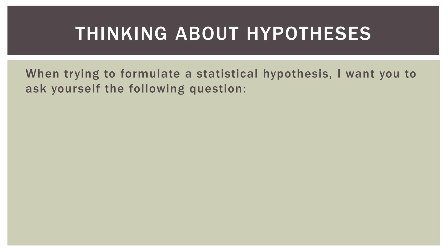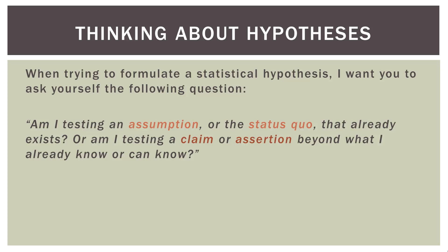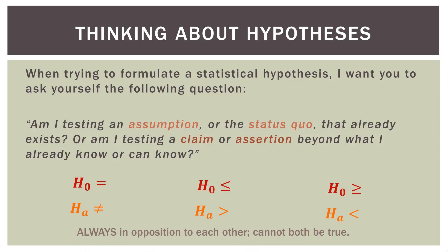A couple of reminders. When formulating a statistical hypothesis, ask yourself: am I testing an assumption or the status quo I already know? Or am I testing a claim, assertion, or conjecture beyond what I already know? The equality sign is always in the null hypothesis, and the opposite is always in the alternative. Assumptions always go in the null; unknown conjectures, claims, or research hypotheses go in the alternative. These are always in opposition — they cannot both be true.